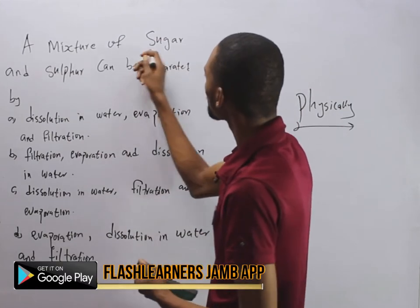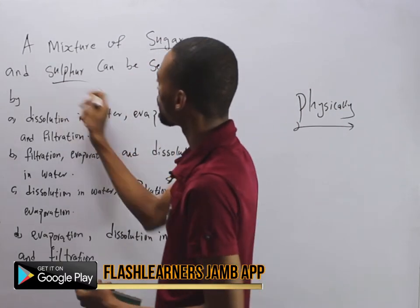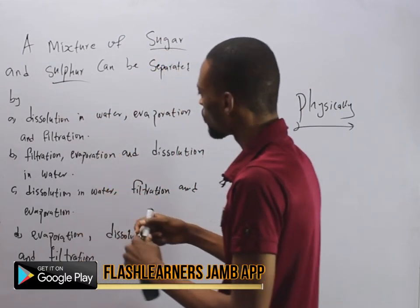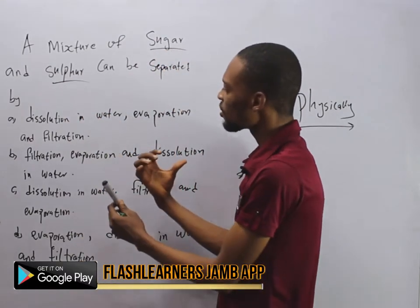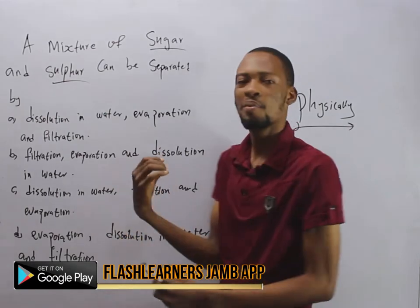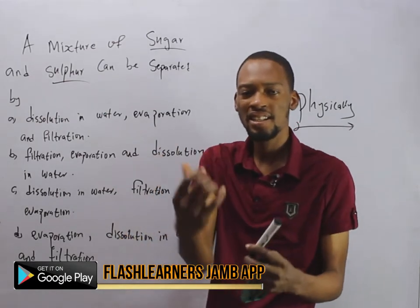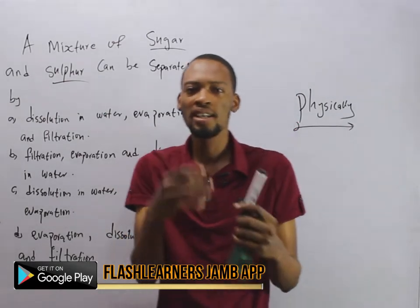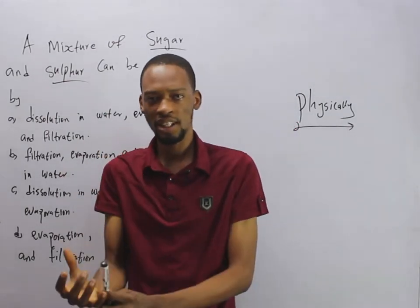Anything you can mix together — even air — is a mixture. Now, in this situation we have sugar and sulfur. Which of the following options best explains the way we can separate them?